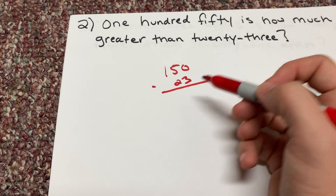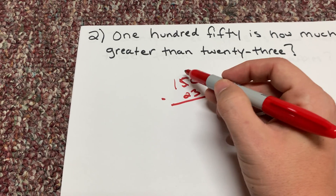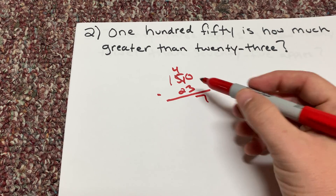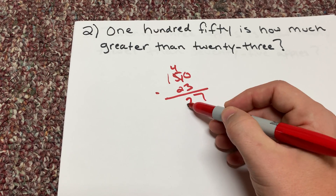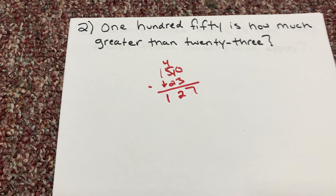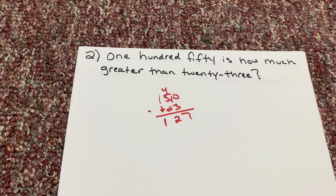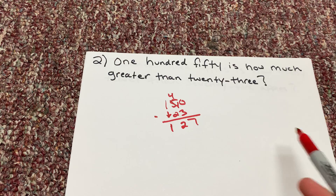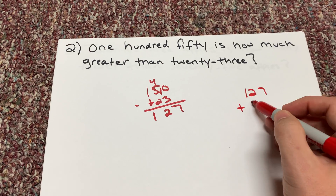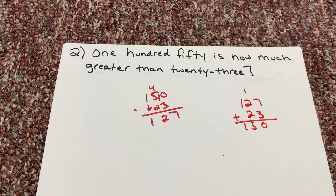In the ones place, I see 0 and 3 — I can't take 3 from 0, so I borrow from my tens. This becomes a 4, and the ones become 10. Take 3 from 10, I get 7. In the tens place, take 2 from 4, I get 2. I have nothing in the hundreds to subtract, so I bring down my 1. So 150 is 127 greater than 23. We know that because 127 plus 23 does, in fact, give us 150.